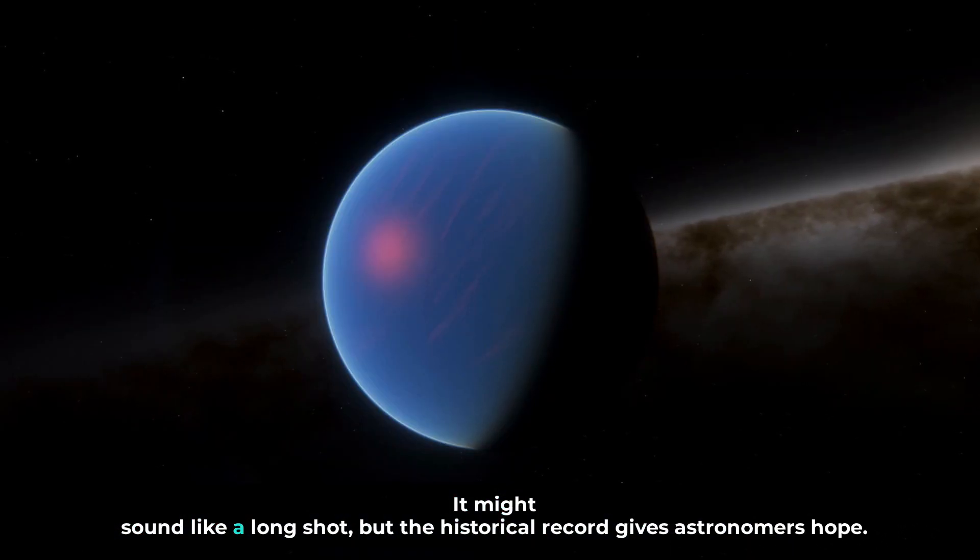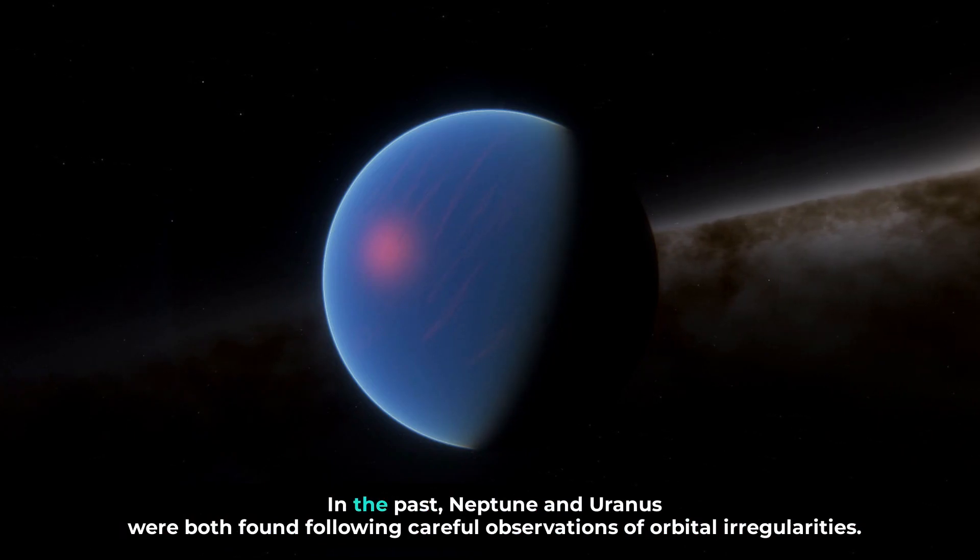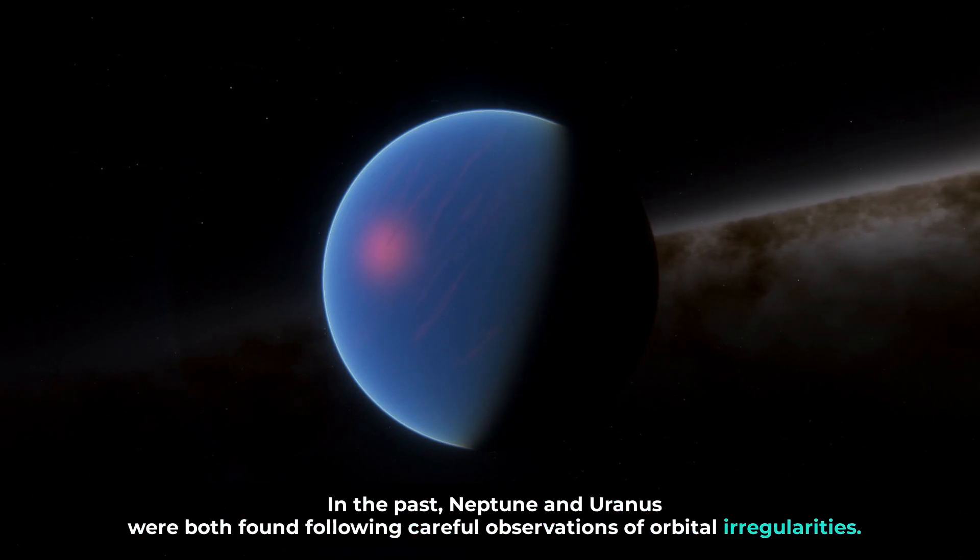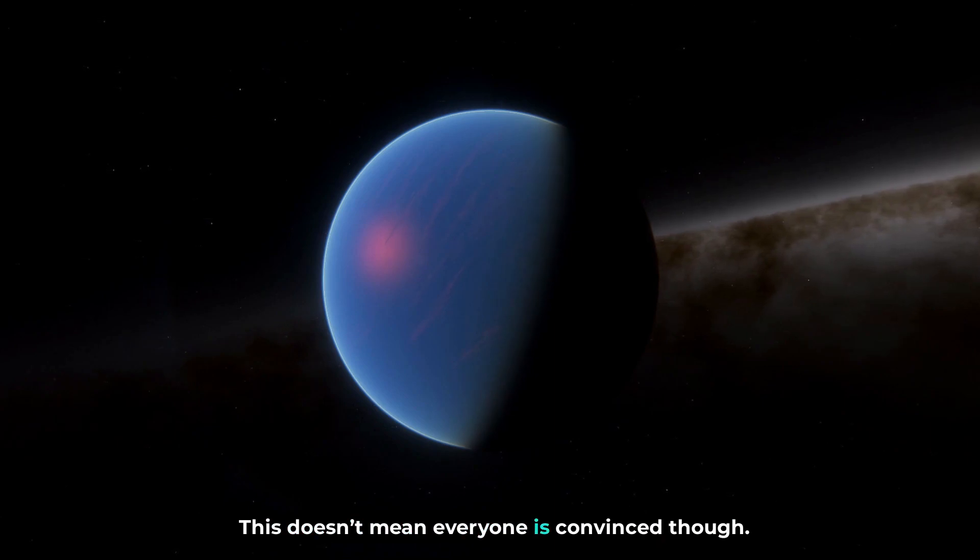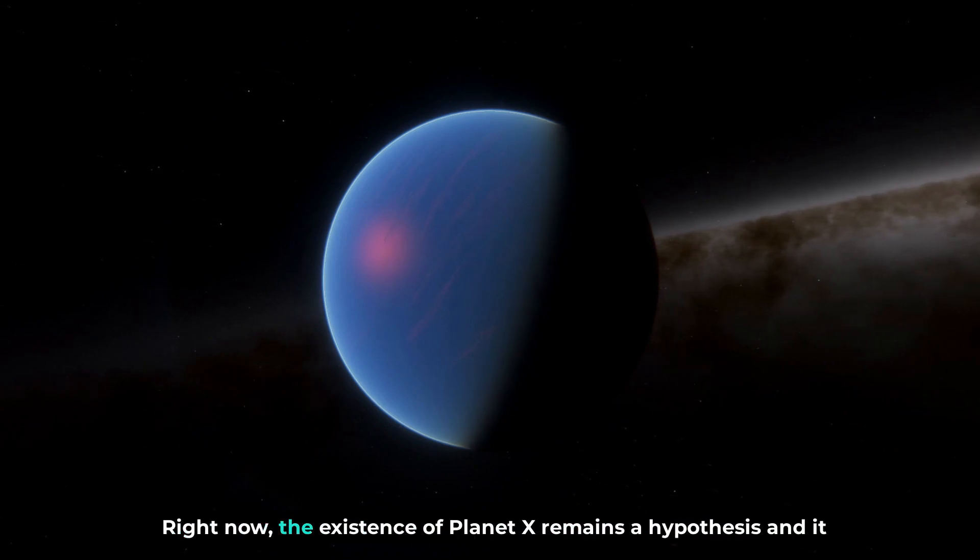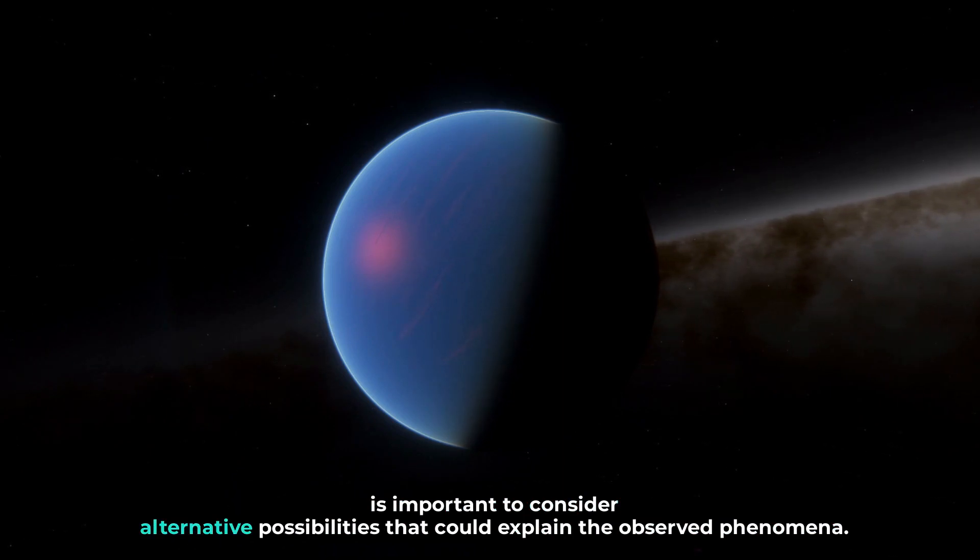It might sound like a long shot, but the historical record gives astronomers hope. In the past, Neptune and Uranus were both found following careful observations of orbital irregularities. This doesn't mean everyone is convinced, though. Right now, the existence of Planet X remains a hypothesis, and it is important to consider alternative possibilities that could explain the observed phenomena.